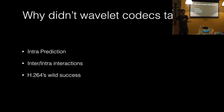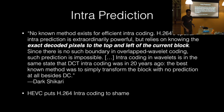So why didn't wavelet codecs take off? They kind of suck at intra-prediction. They also struggle with the interface between intra-prediction and inter-prediction — between predicting from the previous frame and mixing that with new content. And H.264 was wildly, wildly successful. Dark Shakiri notes there's no known method for efficient intra-coding in wavelet codecs, while H.264's spatial prediction is extraordinarily powerful and HEVC's intra-prediction puts H.264's solution to shame by an order of magnitude.